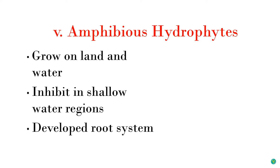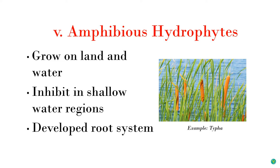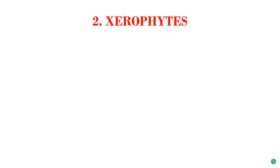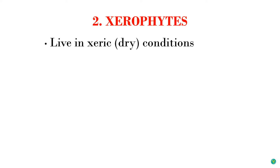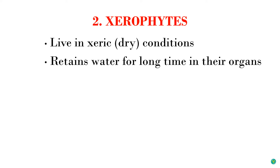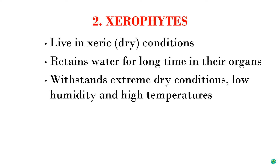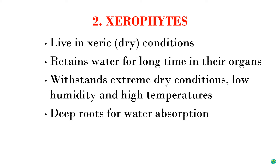Amphibious hydrophytes have well-developed root systems; an example is Typha. The next group after hydrophytes is xerophytes. These plants grow in dry habitats like deserts, sand hills, and rock surfaces — in simple terms, they are drought-loving plants. They store water in their organs for long periods and are modified to withstand very hot climatic conditions. Most have very deep and extensive root systems for water absorption.